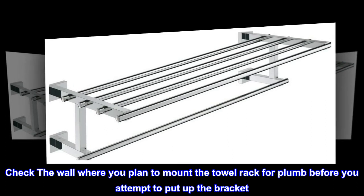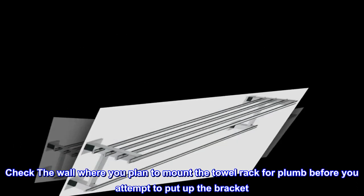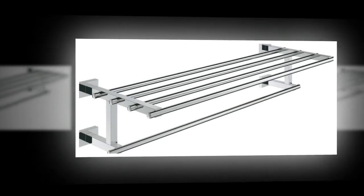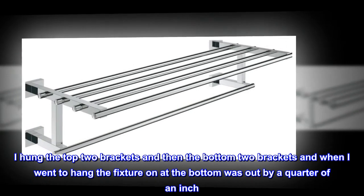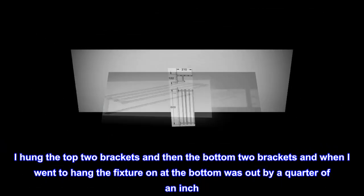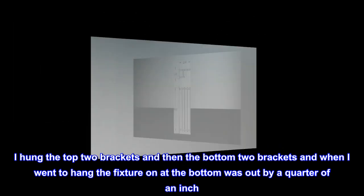Check the wall where you plan to mount the towel rack for plumb before you attempt to put up the brackets. I hung the top two brackets and then the bottom two brackets, and when I went to hang the fixture on, the bottom was out by a quarter of an inch.